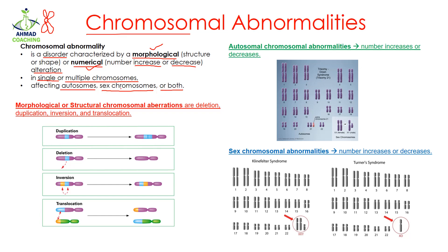The sex chromosomes are the X and Y chromosomes, while the rest of the chromosomes are autosomes. We know that in humans there are 23 pairs of chromosomes. Out of these 23 pairs, one pair is the sex chromosome while the remaining 22 pairs are autosomes.